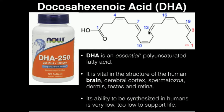Here we have the chemical structure of docosahexaenoic acid, also known as DHA. In a lot of ways, EPA, or eicosapentaenoic acid, another omega-3 fatty acid, is similar to DHA. However, I'm just talking about DHA here, since DHA has a tendency to be by far the most anti-inflammatory. This supplement right here actually contains both DHA and EPA.